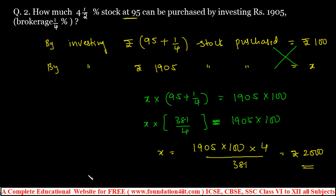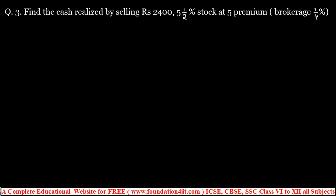This was the purchasing case, so brokerage was added. Now let us see the selling type. Find the cash realized by selling rupees 2400 at 5% premium with brokerage 1/4. It is a selling case, so brokerage should be subtracted. '5 premium' means more than 100: premium should be added and discount should be subtracted from 100. So the stock is at 100 + 5 = 105.